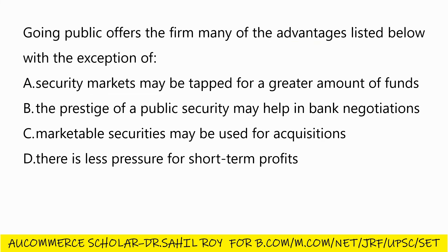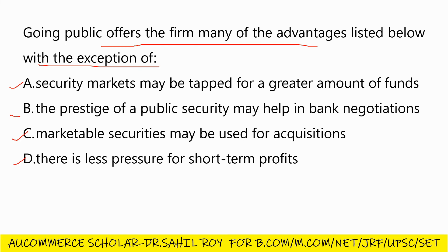Our next question: going public offers the firm many advantages listed below with the exception of — Option A: security markets may be tapped for a greater amount of funds; Option B: the prestige of a public security may help in bank negotiations; Option C: marketable securities may be used for acquisitions; Option D: there is less pressure for short-term profits. The correct answer is Option D.